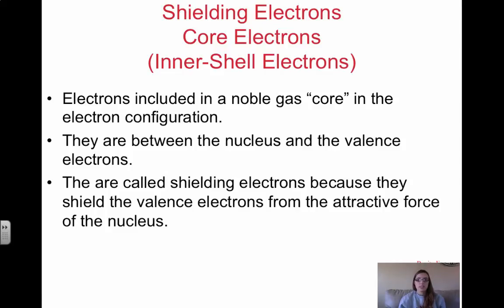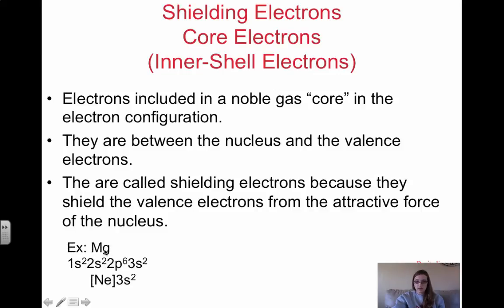We also have shielding electrons, which are the same as core electrons or the inner shell. These are the electrons included in a noble gas core in the configuration. They sit between the nucleus and the valence electrons, and they shield the valence electrons from the attractive force of the nucleus. For example, magnesium's electron configuration is 1s², 2s², 2p⁶, 3s². Rewritten as a noble gas configuration, it is [Ne] 3s². The neon core represents 2 + 2 + 6 = 10 core or shielding electrons, and all 10 of these shield the 3s valence electrons from the nucleus.